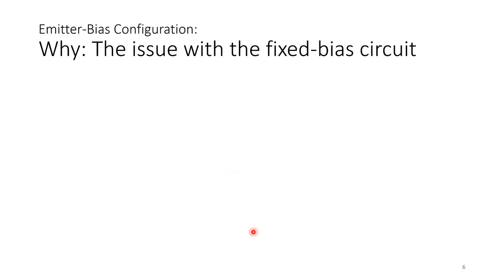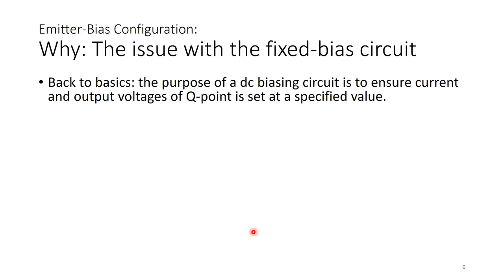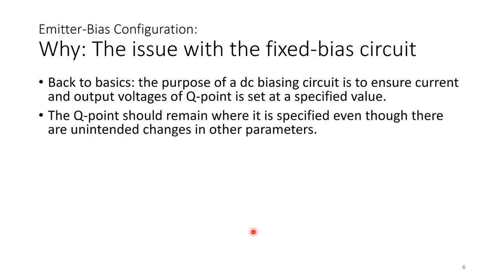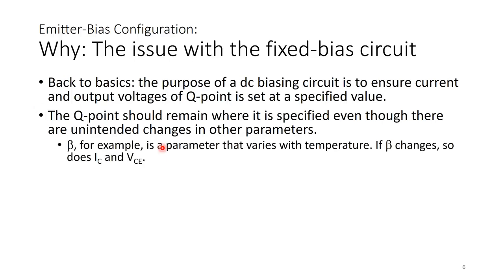What is the issue with the fixed bias circuit? The purpose of a DC biasing circuit is to ensure the Q-point current and output voltages are set at a specified value, and should remain there even with unintended changes in parameters — for example, changes in temperature. Beta is a parameter that varies with temperature; if beta changes, so do IC and VCE. We would like to eliminate the effect of beta changes on IC and VCE.